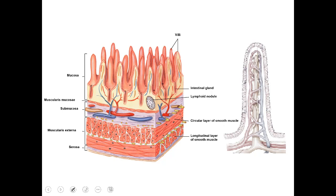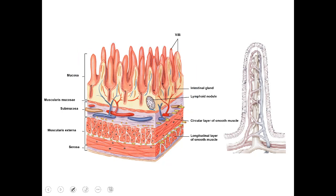Looking at a smaller scale, we see just the villi. Many villi here make up the mucosal layer. Below that is the submucosal layer, and then we have muscularis externa as the bottom two layers — the outermost being the longitudinal muscle and the layer just in from that being the circular muscle.